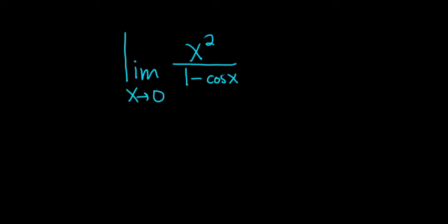Find the limit of x squared over 1 minus cosine x as x approaches 0. So when you have a limit, the first thing you should try to do is evaluate it at the number.